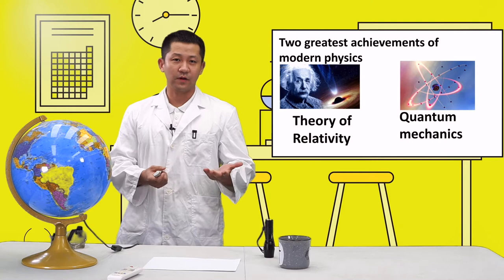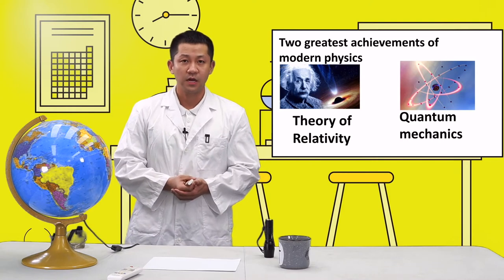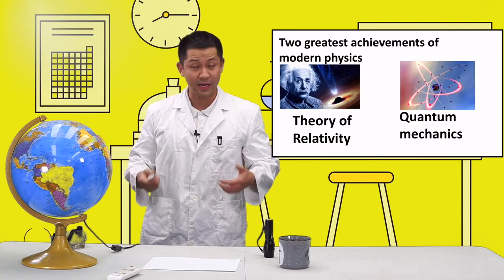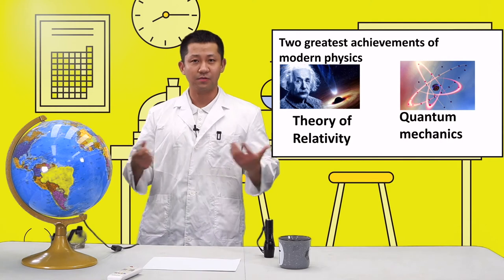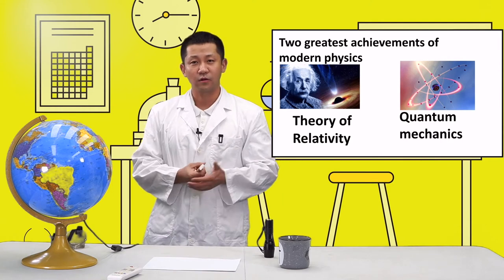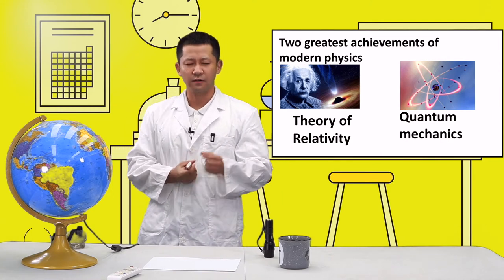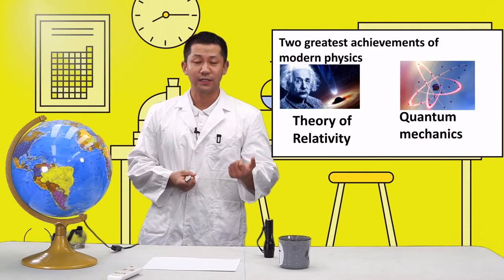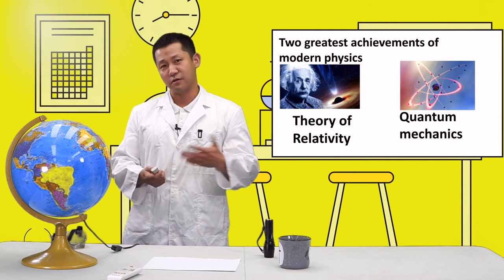The theory of relativity studied something very big, for example like galaxies, planets, stars, black holes. But quantum physics studies very tiny things. For example, all materials are made of atoms. We study atoms, structure of atoms, electrons, neutrons.